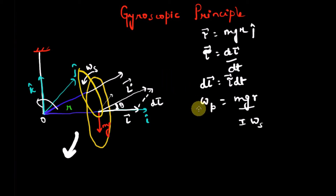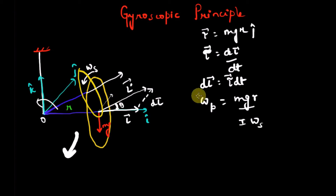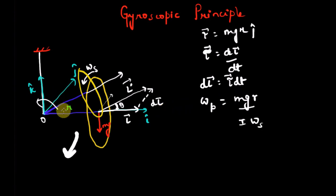This is very important: the precession angular velocity is inversely proportional to the initial spin velocity. So if we give the disc a very high Ω_s, it will precess slowly about the k̂ axis. If Ω_s is small, the disc precesses faster. Also, if the weight is greater, the numerator mgr is larger and the disc precesses faster about k̂.